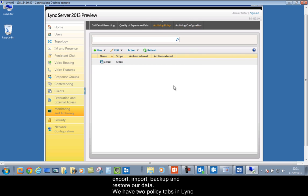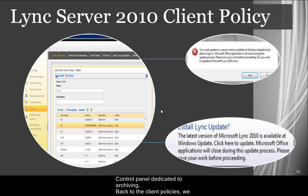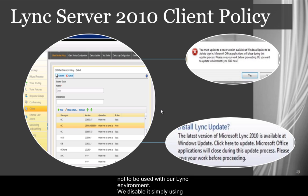We have two policy tabs in the Lync Control Panel dedicated to archiving. Back to the client policies — we are able to decide, for example, that the old Office Communications Server client is not to be used with our Lync environment. We disable it simply using policy, but with the same instrument we also manage client updates.